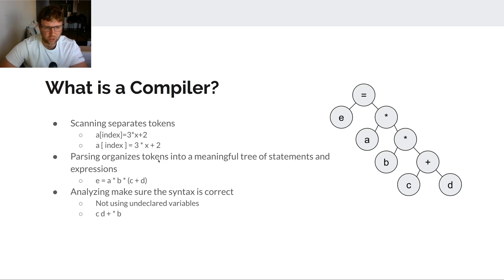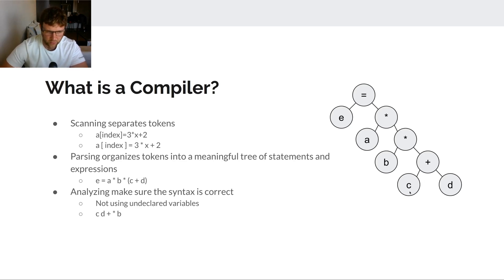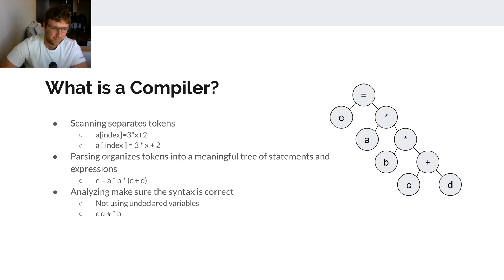Before runtime we also do the analyzing phase — making sure all syntax is correct. For example, it checks that we're not using undeclared variables. If I had previously declared a, b, c, and d but used f instead, f is a valid token and fits into the tree, but if f wasn't declared beforehand the analyzing phase will catch it. Analyzing also ensures the tree can actually be formed — writing gibberish like 'c d + * b' doesn't make sense, and those errors get caught here.